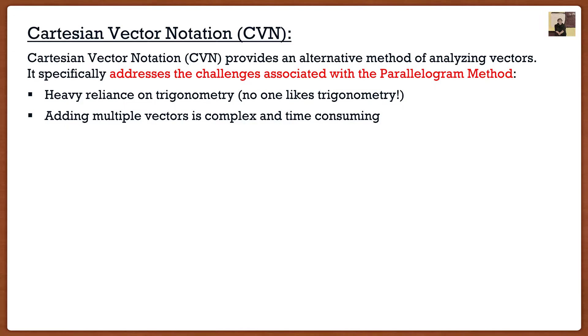Now the last problem is it's hard to program. As you guys are going to see later, everything in engineering can be done very nicely using a computer. If we have a problem where it's basically just trigonometry, it's very hard to program that problem. This Cartesian vector notation method is going to be very simple to program and allow us to do a lot of things very quickly.